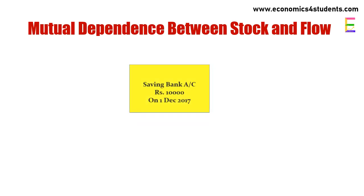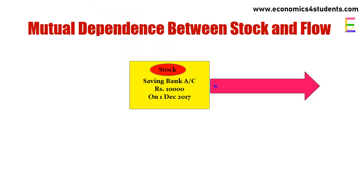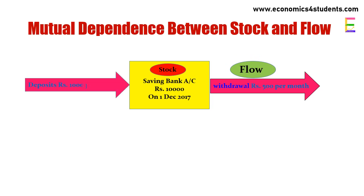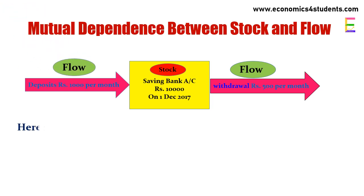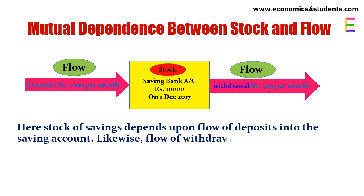Let's see how stock and flow are mutually dependent. Suppose there is a deposit of rupees 10,000 in a bank account on 1st December 2017 — that is a stock concept. If there is a withdrawal from this account of rupees 500 per month, that will be a flow concept. Similarly, a deposit of rupees 1,000 per month will be a flow concept. Here, stock of savings depends upon the flow of deposits into the saving account; likewise, flow of withdrawal depends upon the stock of savings. So we can say stock and flow are mutually dependent.